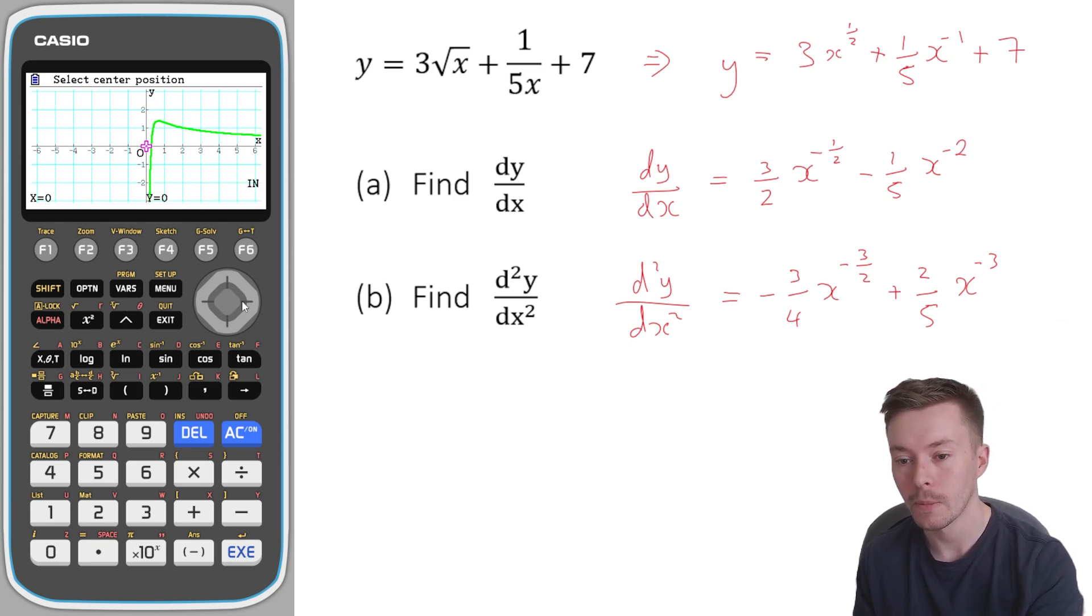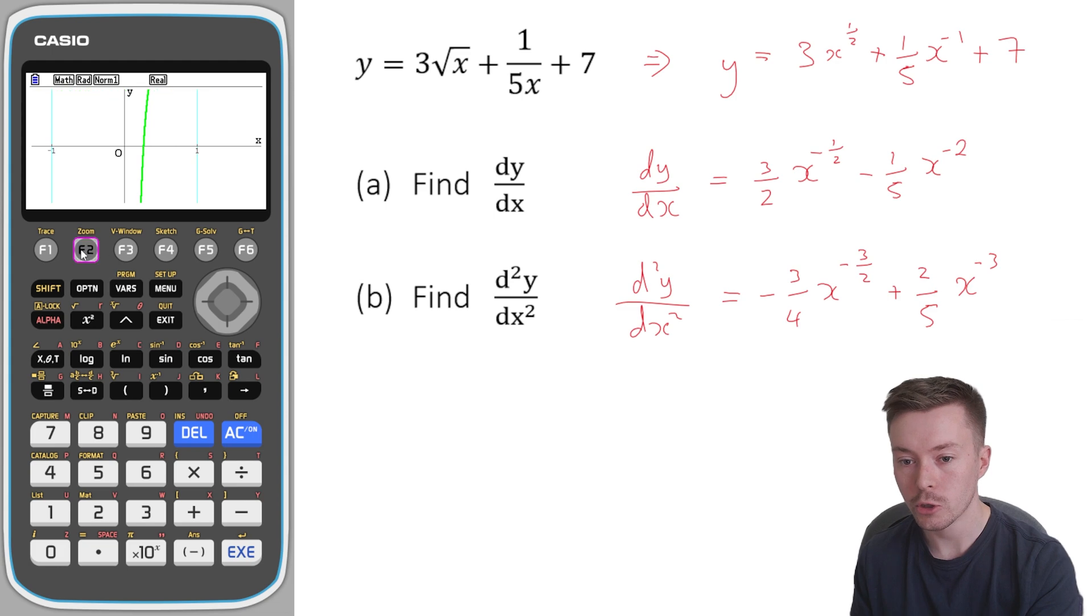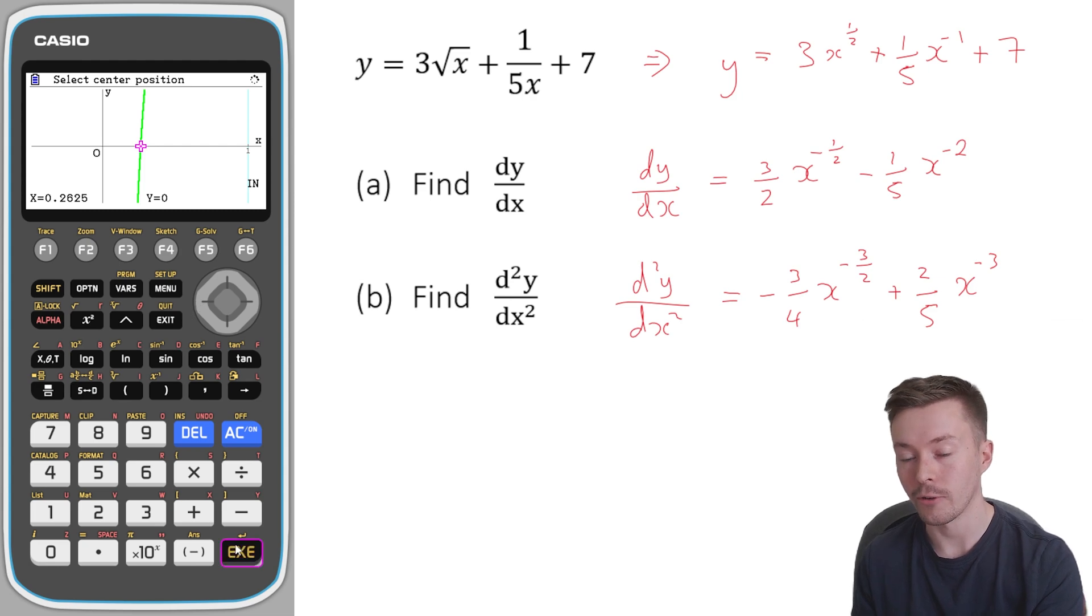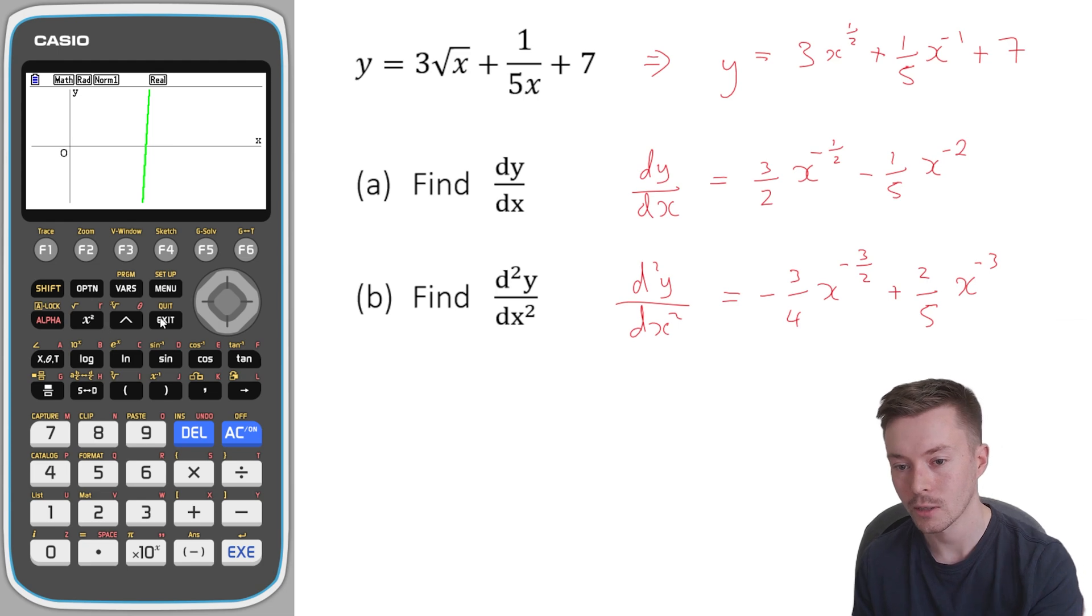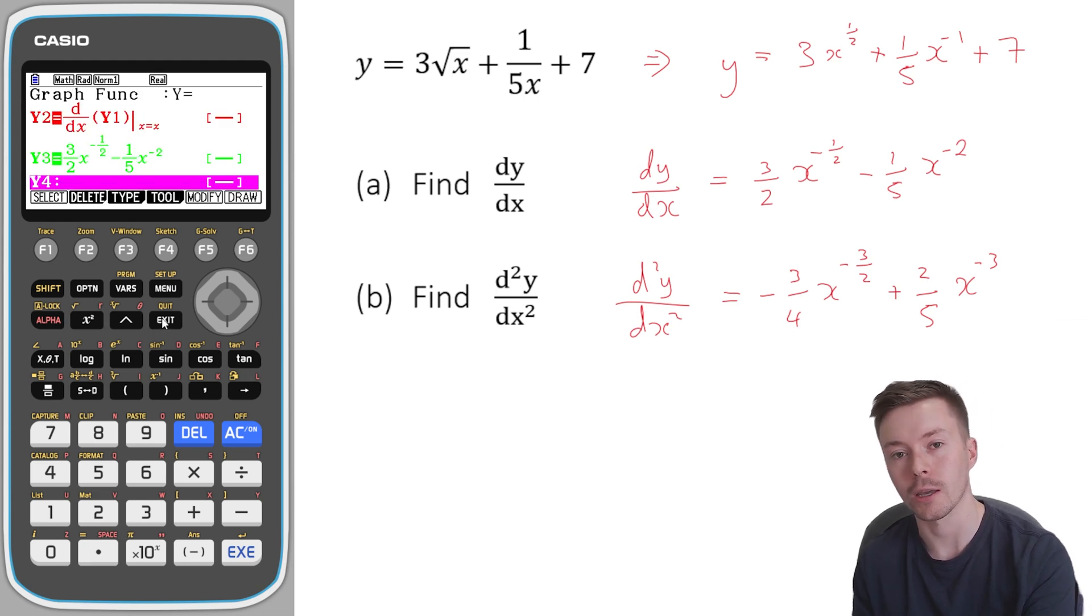And so if I zoom in, I can check this. So you can zoom in as much or as little as you want to feel confident that these are the same thing, that these are the same function, that what you've done is correct. At this point, I'm very certain I've done this right. And that's my method of checking it.